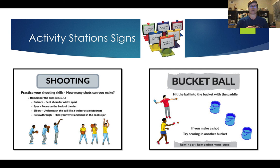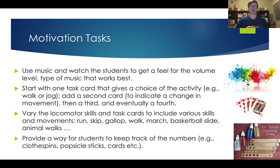For example, one station might say 'practice your shooting skills — see how many you can make, remember your cues: BEEF (balance, eyes, elbow, follow through).' Another station might be 'bucket ball — hit the ball into the bucket with the paddle.' You could list cues on the back of the card as a reference. Stations with visual and instructional signs increase success for students with ASD throughout physical activities.